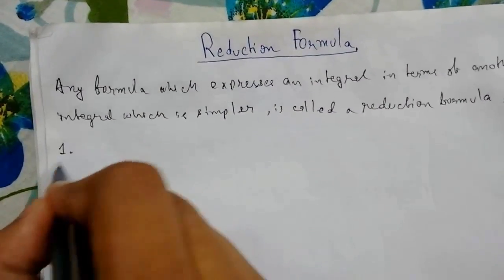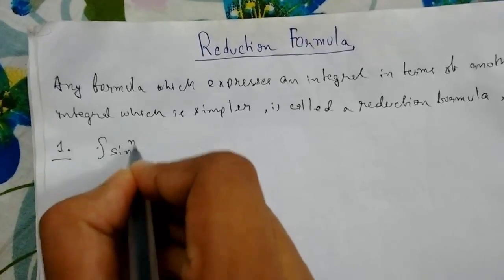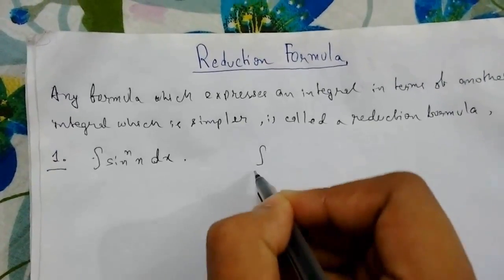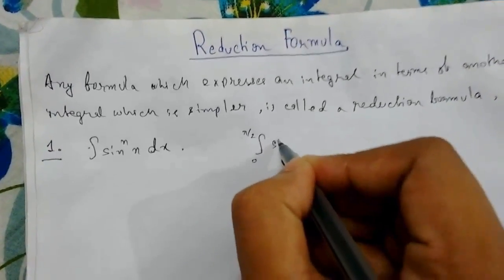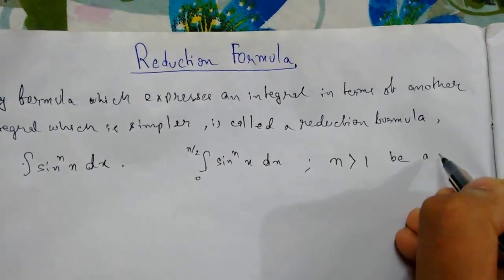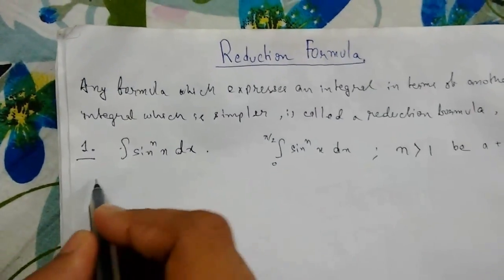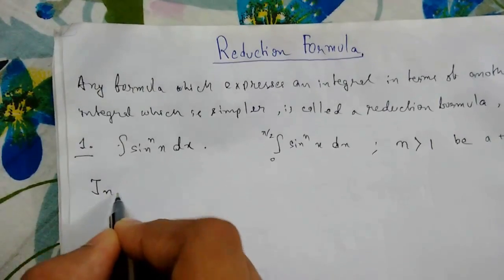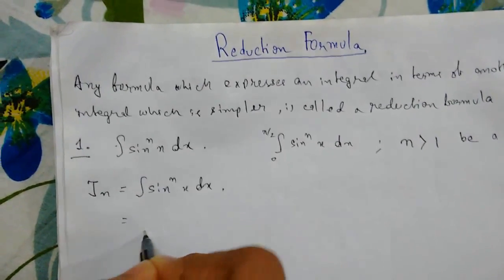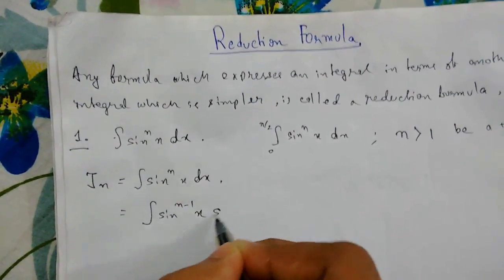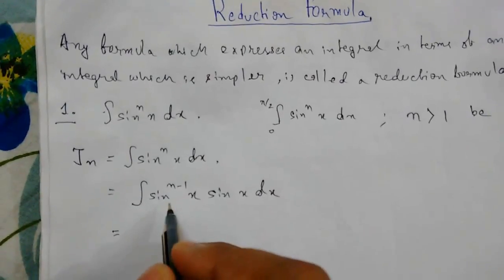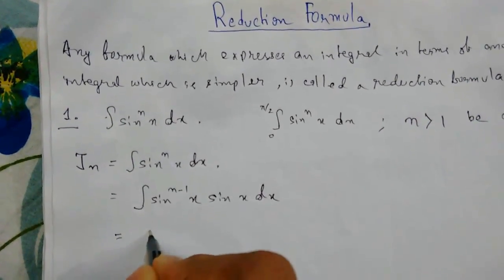There are some standard trigonometric and other functions with reduction formulas which need to be evaluated. First we'll look at the integral of sin^n(x) dx, and second, the definite integral from 0 to π/2 of sin^n(x) dx, where n is a positive integer greater than 1. Let J_n be the integral of sin^n(x) dx. We will write sin^n(x) as sin^(n-1)(x) times sin(x) and apply integration by parts.